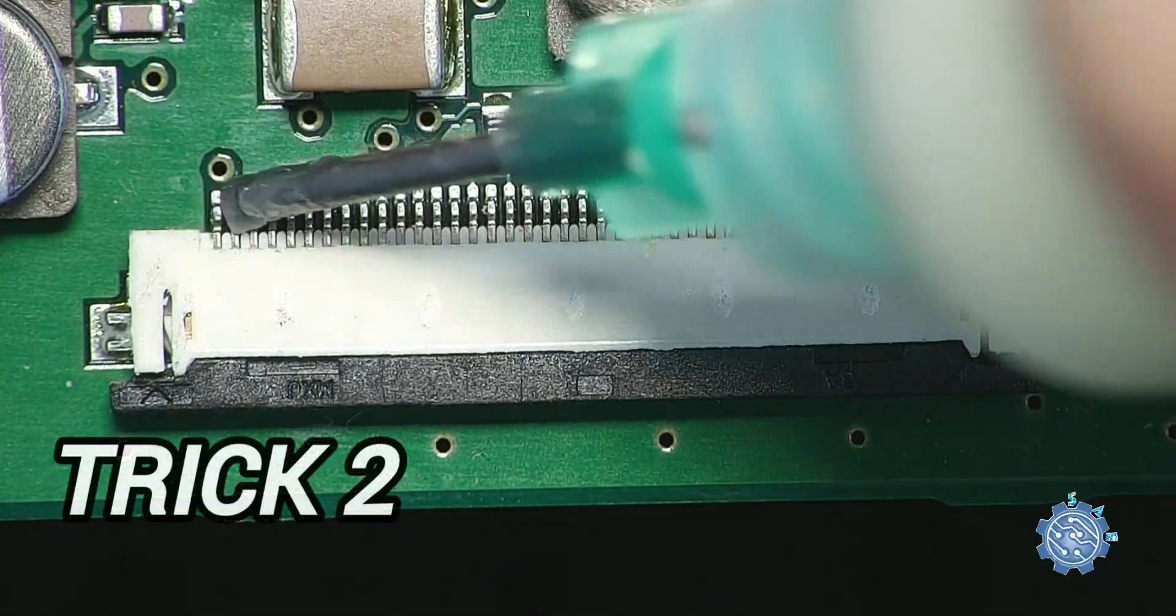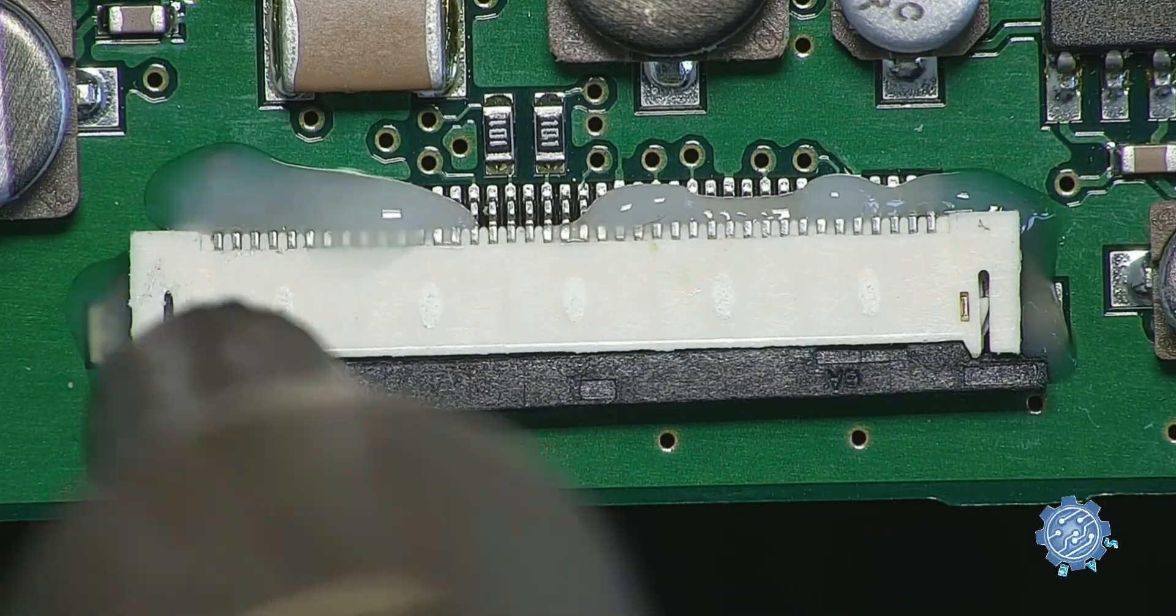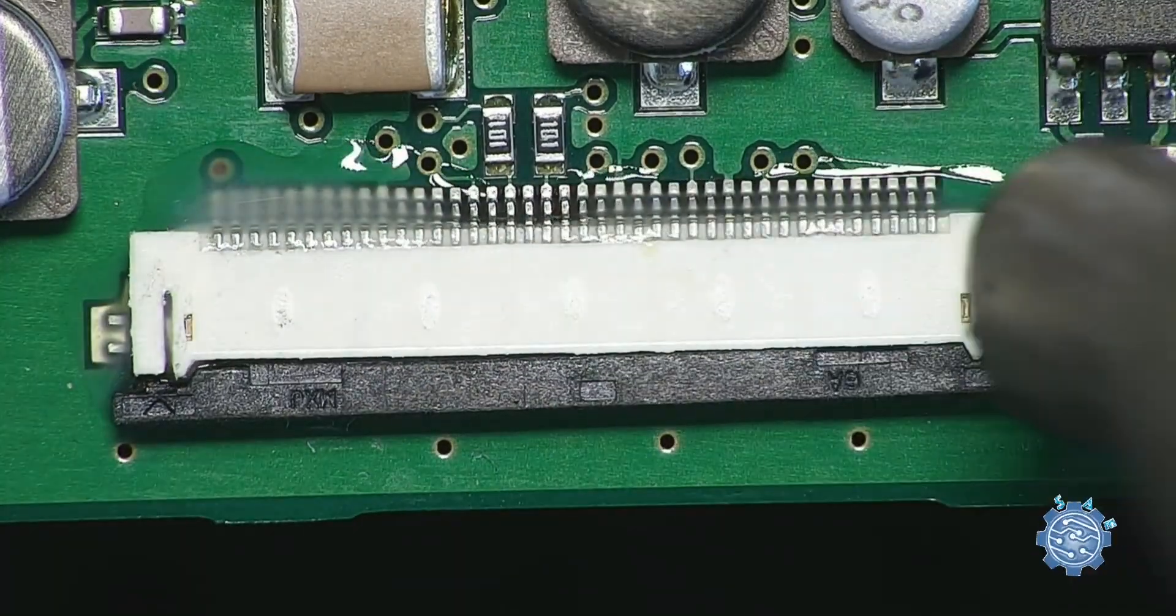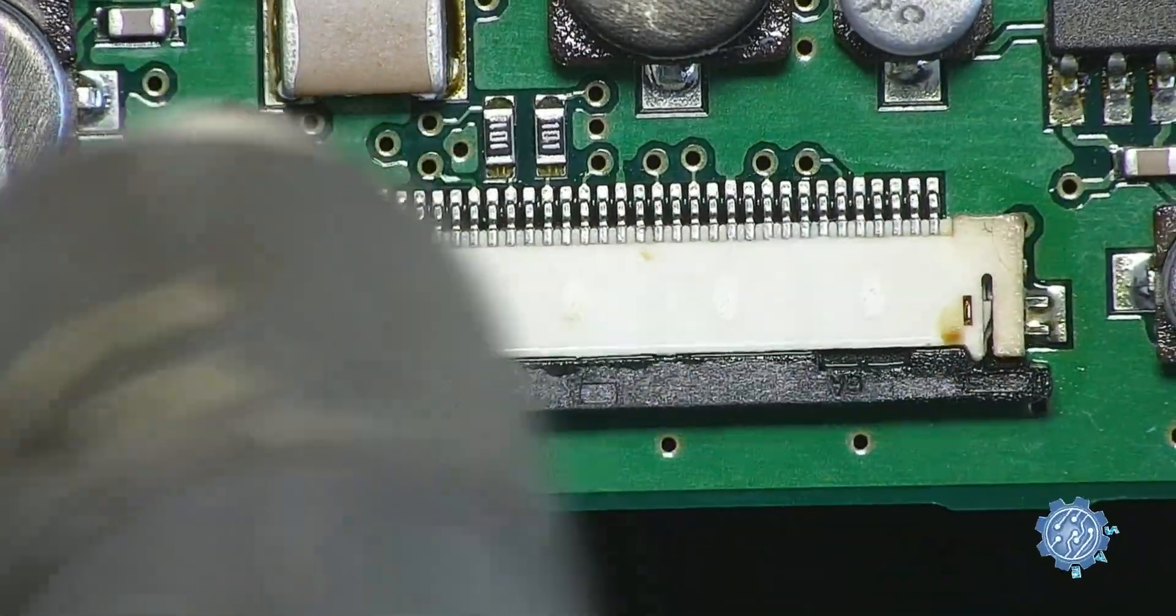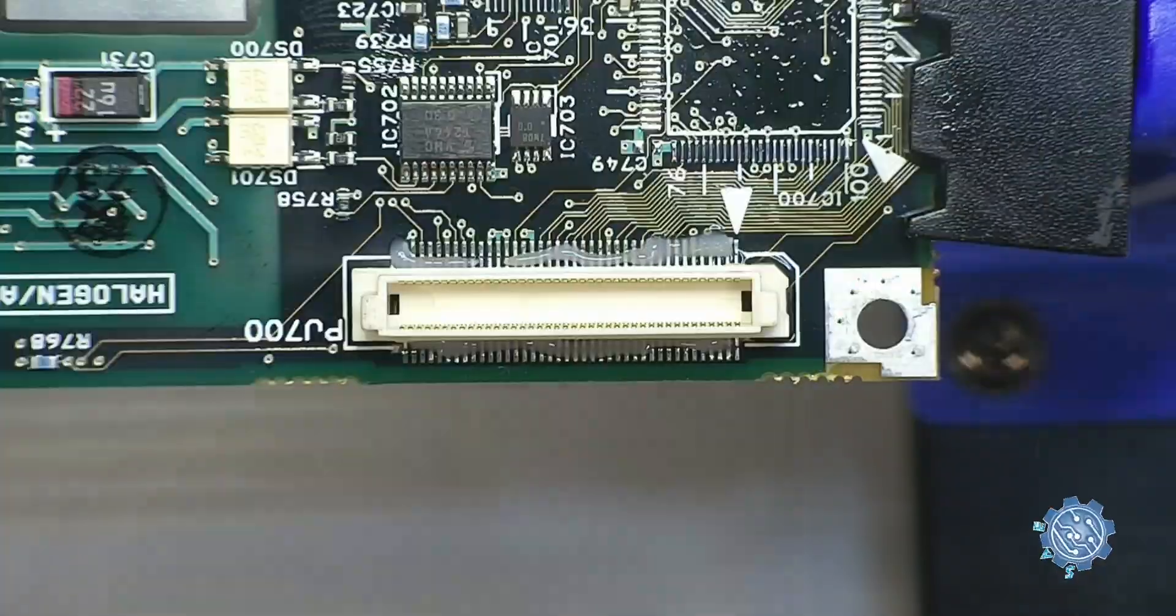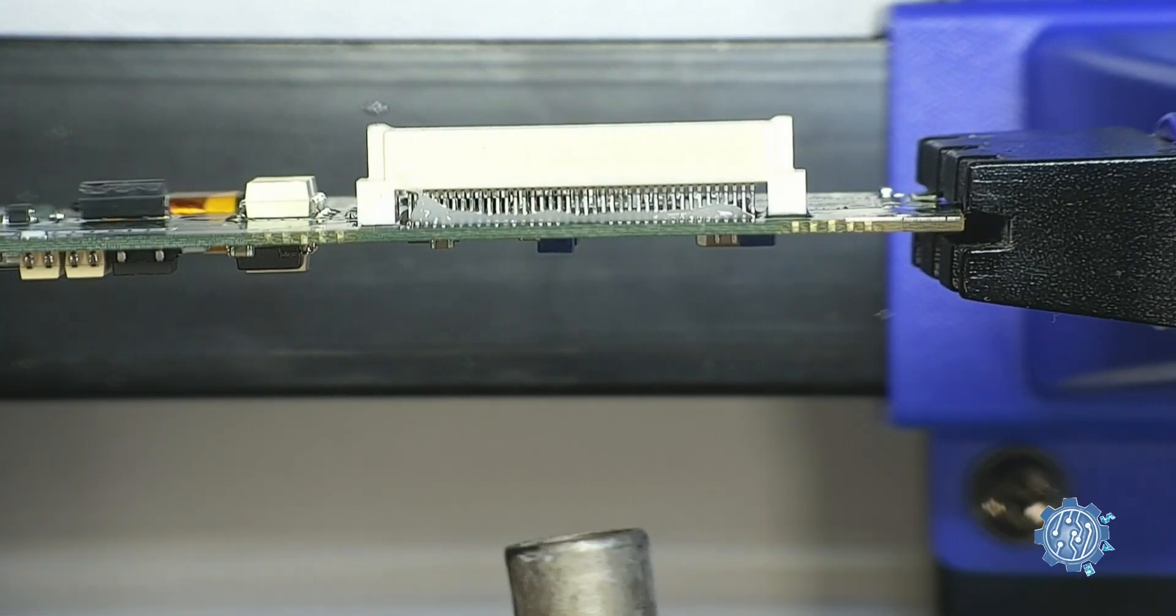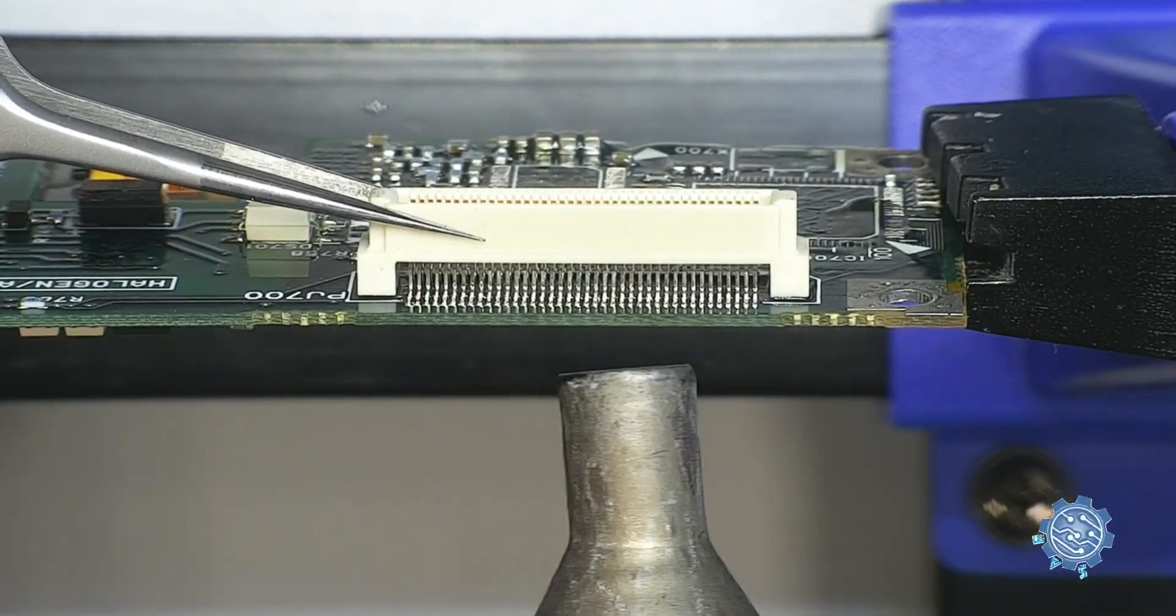Hot air station. Using a hot air station can make your job easier but pay attention to how you use it. When reusing a connector, avoid direct heating as it can damage the plastic case. Twist the board and heat the area below the connector for a clean and unaffected connection.